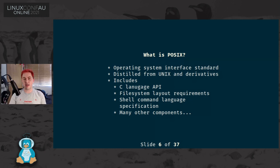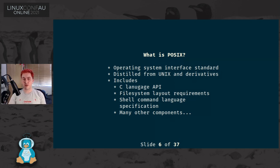It includes a C language API - function bindings that need to exist for programs written in C or that are interoperable with C via FFI. File system layout requirements, the existence of certain directories and things within directories. The specification for the shell command language, the syntax and the semantics of that language, and many other features of that interface.